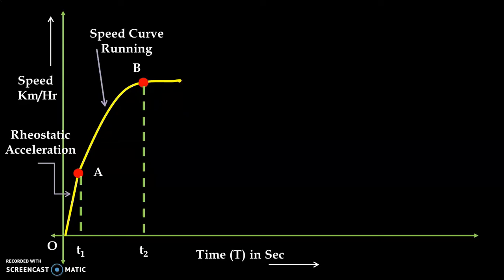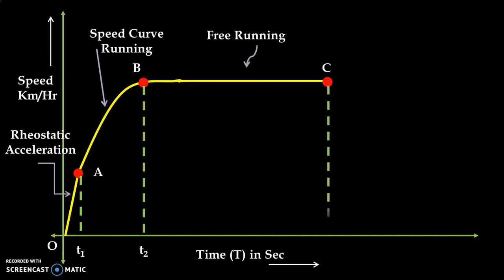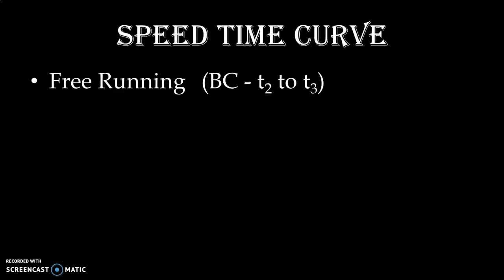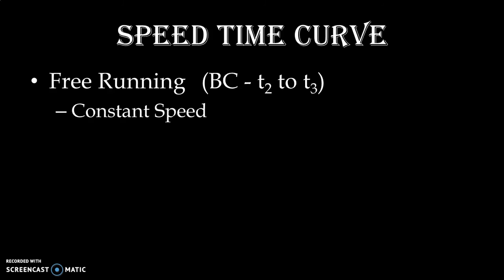The next stage is free running. From point B, when acceleration becomes zero and the train has achieved maximum speed, then from point B to point C it is free running. The time taken for free running is from t2 to t3. Here we have constant speed, acceleration is zero, and almost constant power is drawn by the train. At point B the train has achieved maximum speed and at maximum speed the train runs during free running.